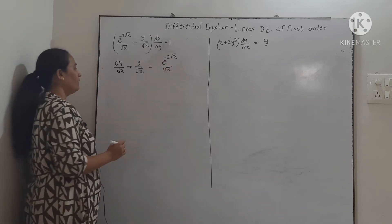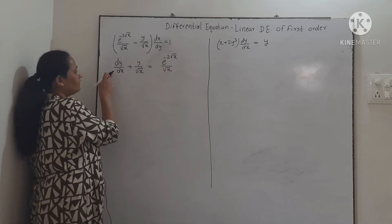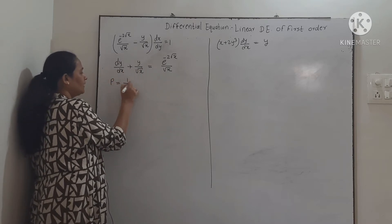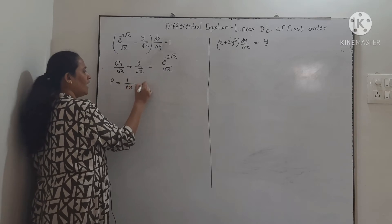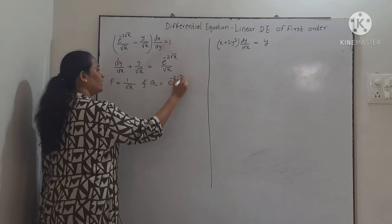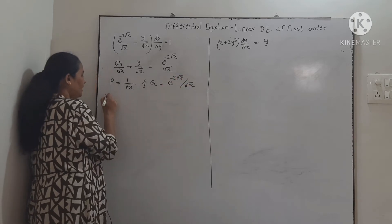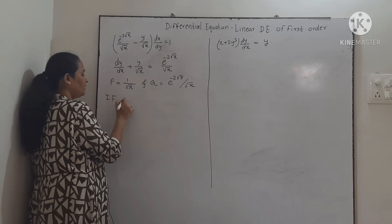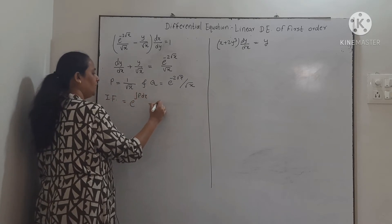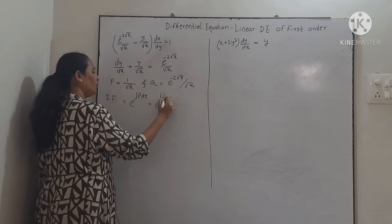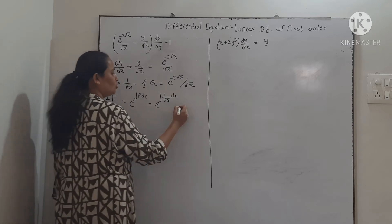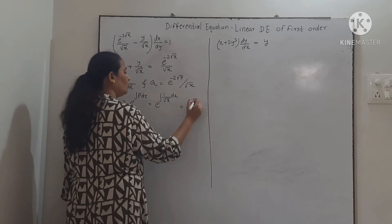This is linear in y. Comparing with dy/dx + Py = Q, we get P = 1/√x and Q = e^(−2√x)/√x. The integrating factor is e^(∫P dx) = e^(∫1/√x dx). Since the integral of 1/√x is 2√x, the integrating factor is e^(2√x).